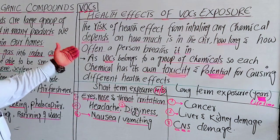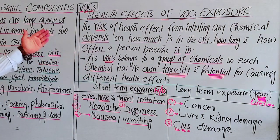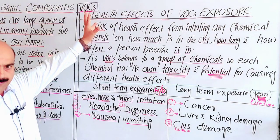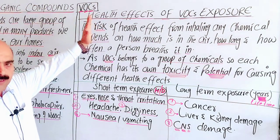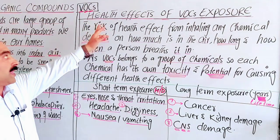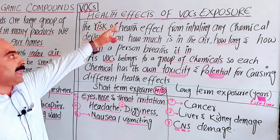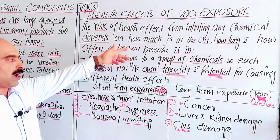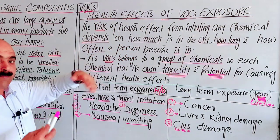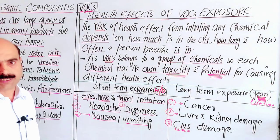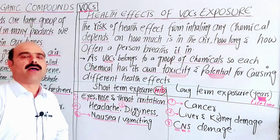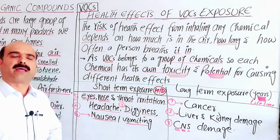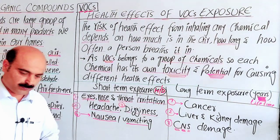So students, these were all about volatile organic compounds — a primary pollutant — including its sources and health effects when exposed. The next topic, insha Allah, will be hydrocarbons as another primary pollutant, which we will discuss next.